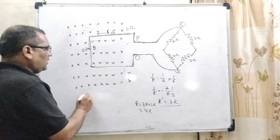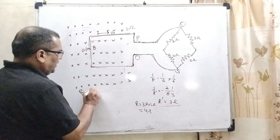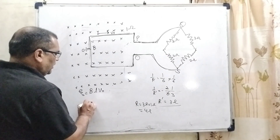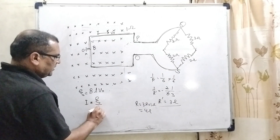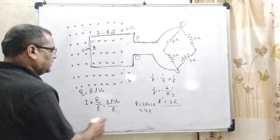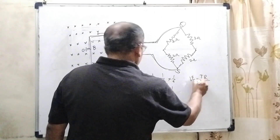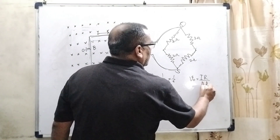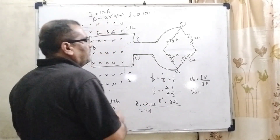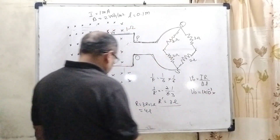Here, as we know, the induced EMF due to this motional loop is BLV₀, and the current I equals the induced EMF divided by resistance, that is BLV₀ upon R. We have to find out the velocity, so it can be written as V₀ equal to I times R divided by B times L. Now substitute all the values. Here I is given as 1 milliampere, that is 1 × 10⁻³ A. The net resistance is 4 ohm.